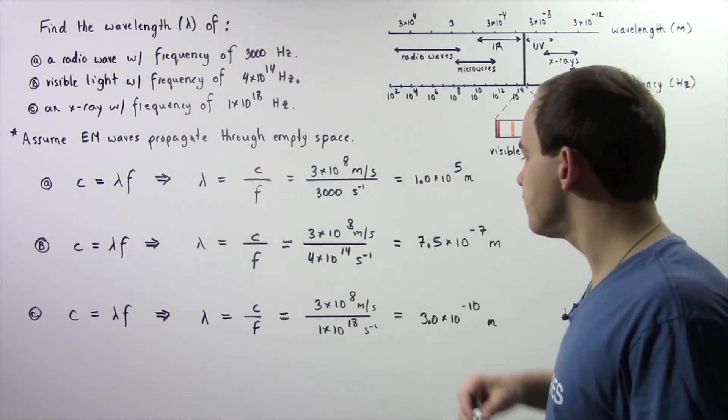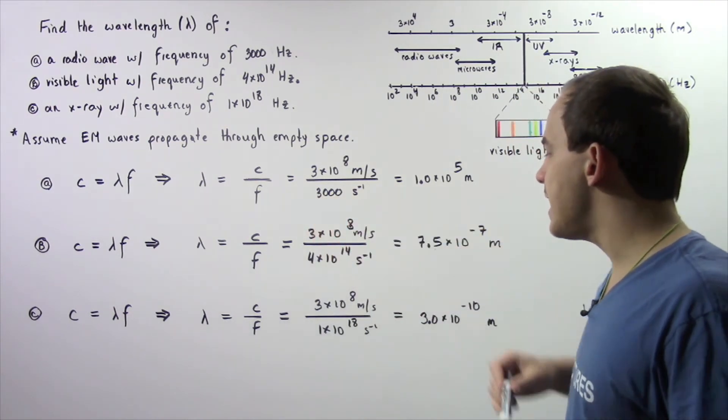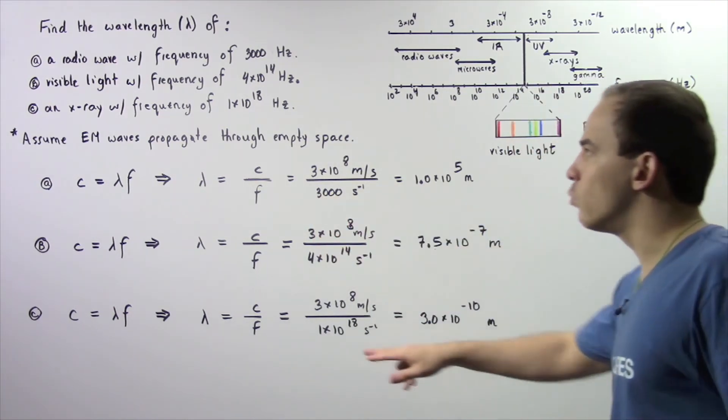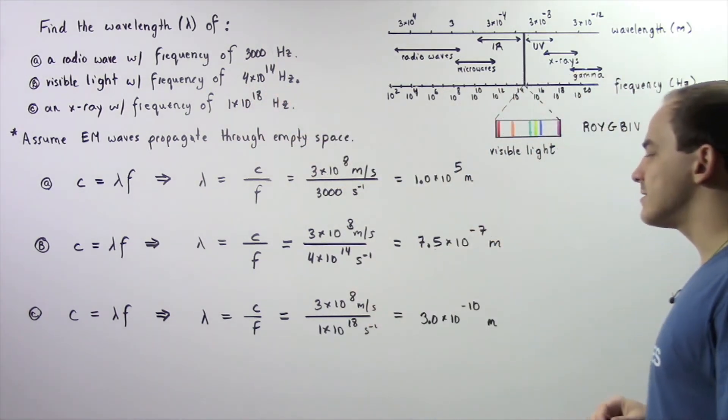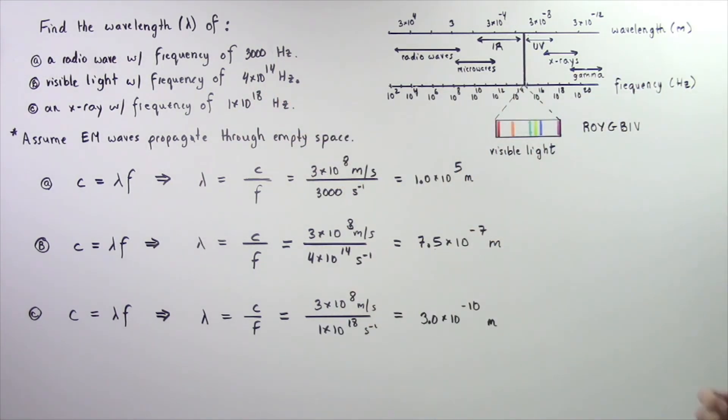And finally in part C, 3 times 10 to the 8 m per second divided by 1 times 10 to the 18 Hz. The seconds cancel and we're left with 3 times 10 to the negative 10 m.